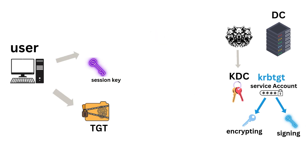The user now has two things: the TGT and the session key. When the user wants to access any service available in the domain — for example, a SQL service or a shared folder — they need to send a request to the DC asking for a TGS (Ticket Granting Service ticket) in order to access that specific service.